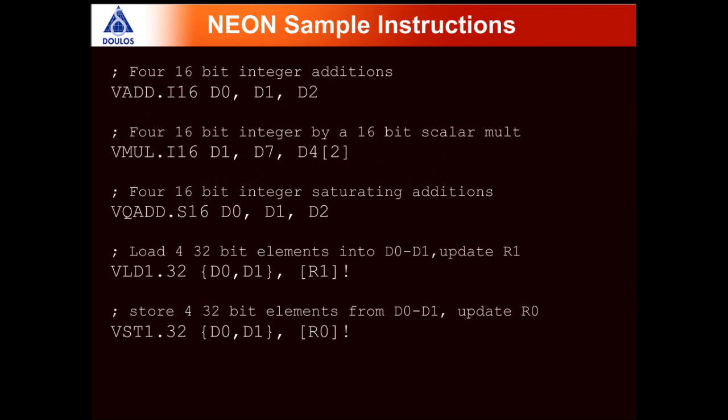Looking at some sample Neon instructions: the first is vadd.i16. The i16 indicates we are dealing with elements of integer type, 16-bit values. d0, d1, and d2 are all 64-bit registers, so our vectors are of size 4. In other words, we are performing four 16-bit parallel additions in one instruction.